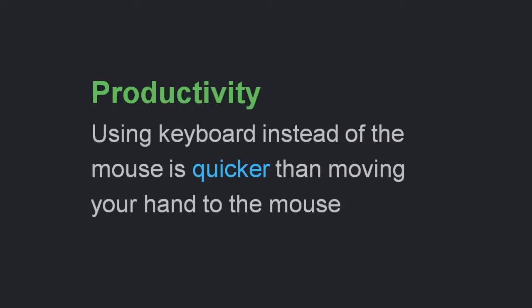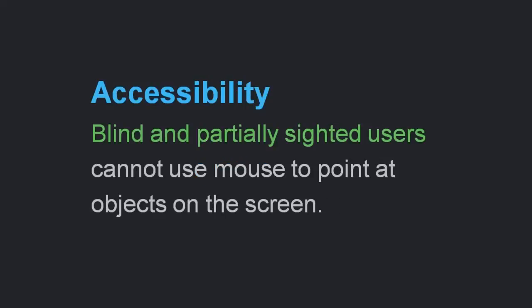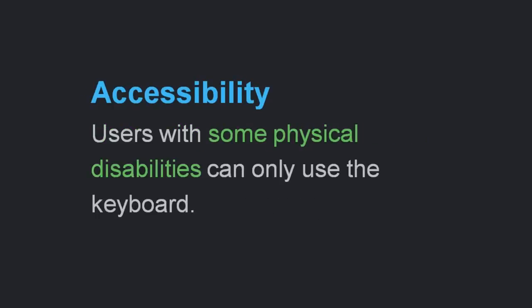Using the keyboard instead of the mouse is simply quicker than moving your hand to the mouse — it can just become part of your typing. But an even bigger reason is accessibility. Blind and partially sighted users cannot use the mouse to point at objects on the screen because they simply cannot see them. And there are many users with physical disabilities that prevent them from using the mouse altogether, so they are reliant on the keyboard.